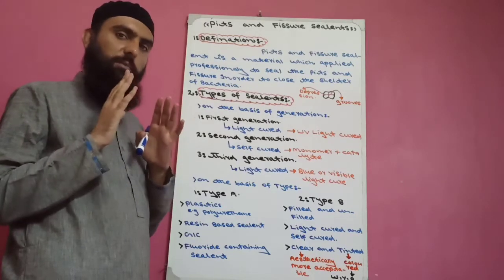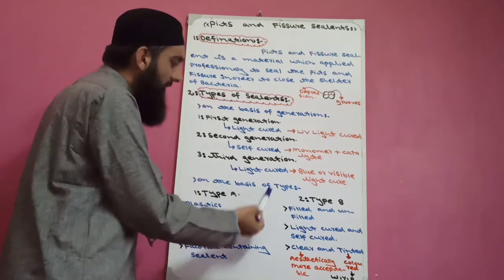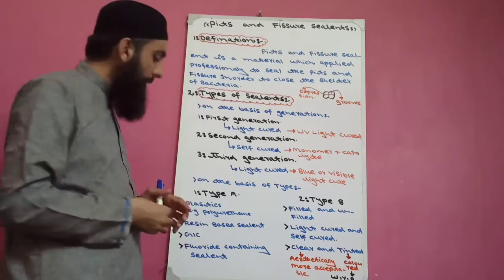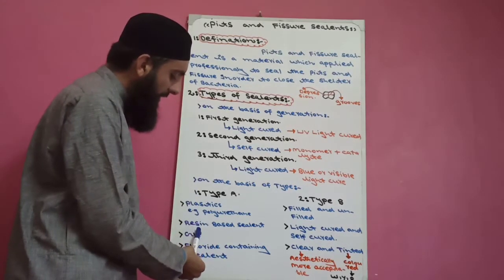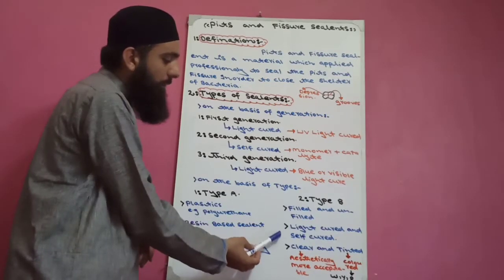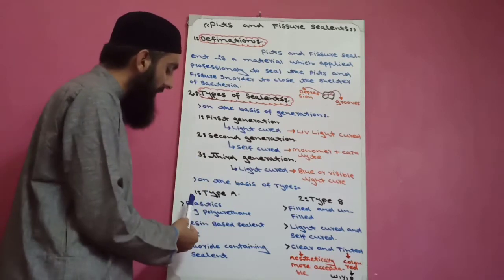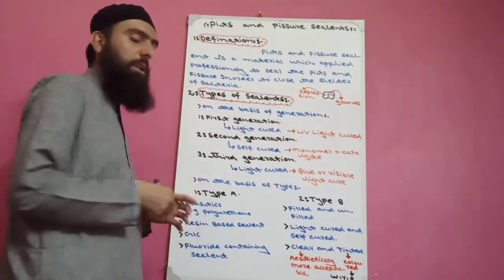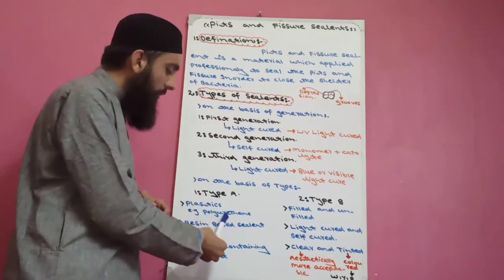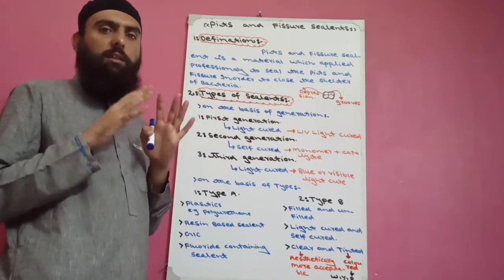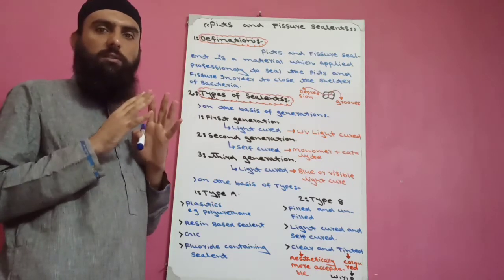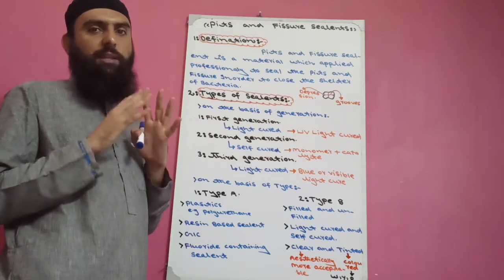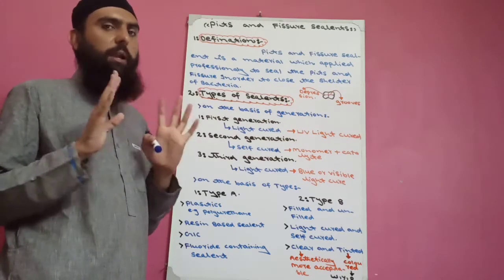Now on the basis of type, there are two types: Type A and Type B. In Type A, four types of pits and fissure sealants are included. The first in Type A is plastic pits and fissure sealant. It was launched in the market, but due to its soft nature its structure breaks down within 3 months, so its use is limited nowadays.